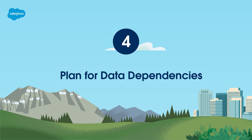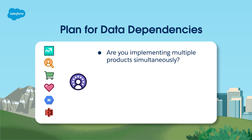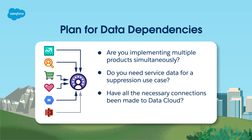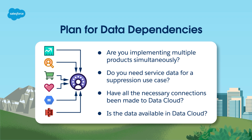Tip number four: plan for data dependencies. Are you implementing multiple products simultaneously? Do you need service data for a suppression use case? Have all the necessary connections been made to Data Cloud? Is the data available in Data Cloud? If you answer yes to any of these questions, or know of similar dependencies your team will encounter, make a plan to move forward even while you're waiting on a dependency. Don't wait for everything to be 100% ready to go. Focus on key use cases with a quick path to value that can be accomplished with the data you have today.